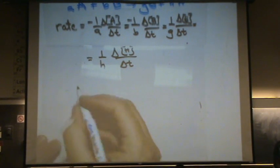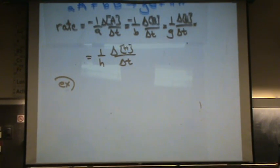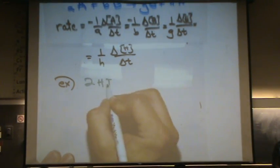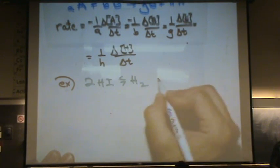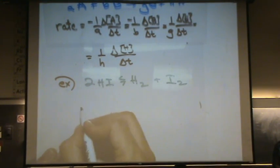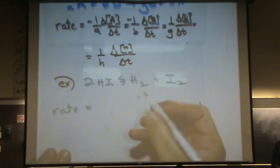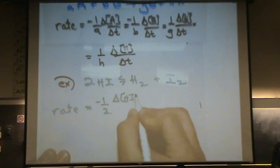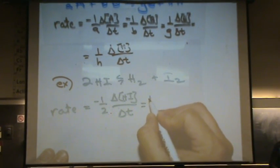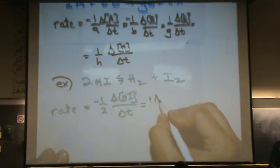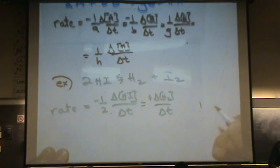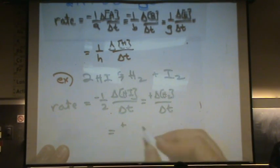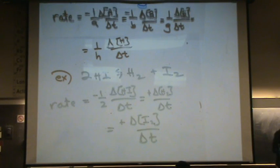So as just a little simple example, if I have the reaction, and you can do this with any reaction, it doesn't matter. But let's say I have this reaction. Then my rate is equal to minus one half change in the concentration of HI over change in time, or positive, and it's positive one over one, change of the concentration of H2 over the change in time, and positive one over one, change in concentration of I2 over the change in time. So just as a specific example, you can see how that would work there.